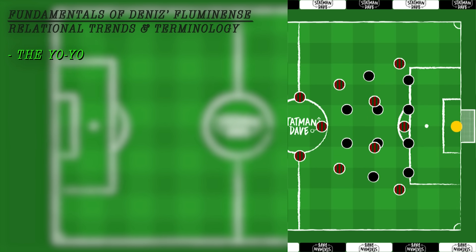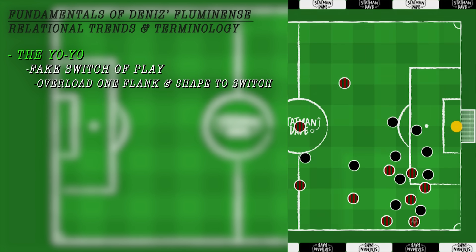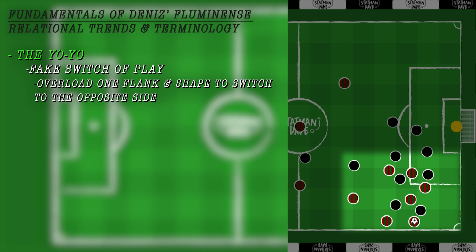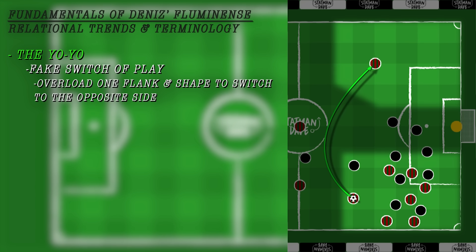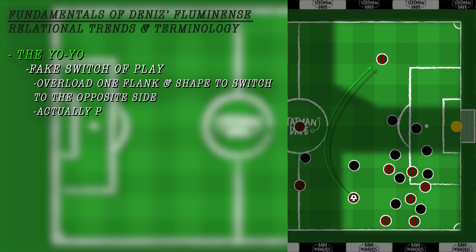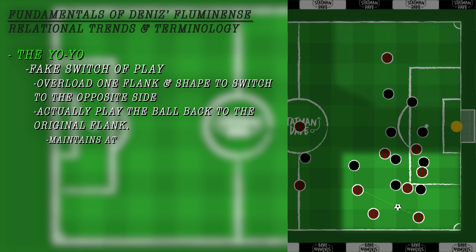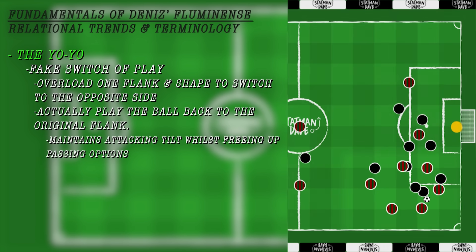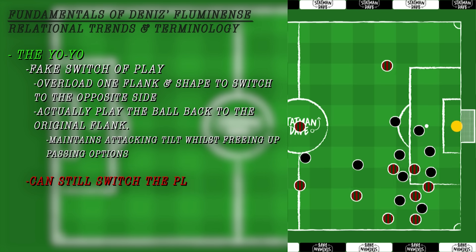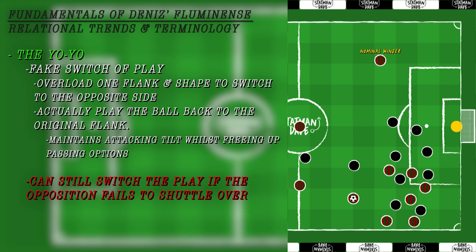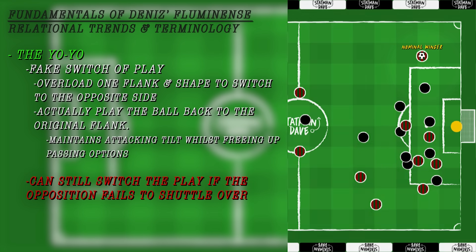A final pattern of play in Fluminense's tactics is called the yo-yo, and represents one of the biggest differences between relational and positional play. Fluminense will overload one flank, drawing the opposition over, then work the ball back to a deeper player to open the switch of play. But here's where it changes: as the opposition start to shuttle over to stop the anticipated switch, Fluminense quickly play the ball back to the original overloaded flank, often completely catching the opposition off guard and finding their attackers in a fresh overload. This often leads to a lot of chances through combination play and rotations. And if the opposition doesn't shuttle over in anticipation, Diniz's men will complete the switch, creating a new overload on the opposite flank.